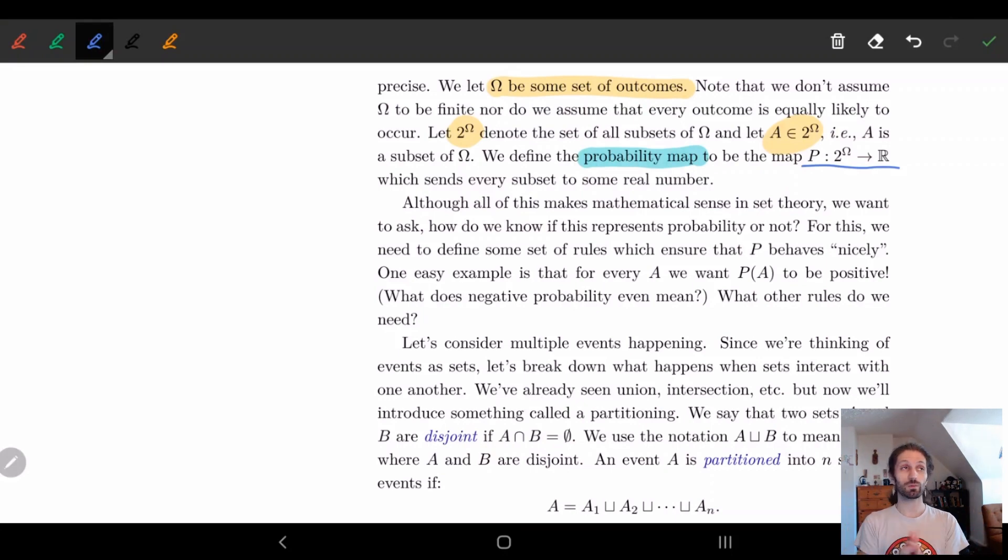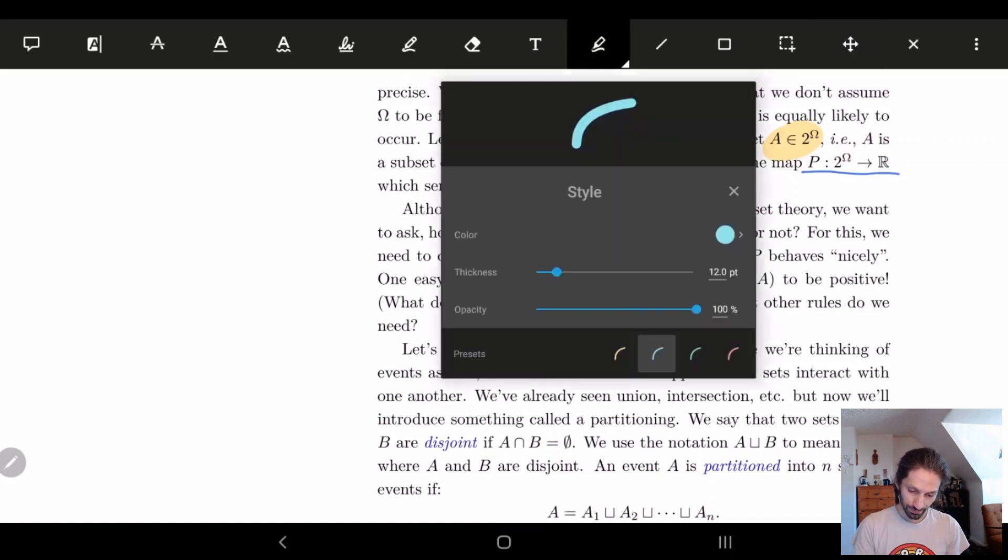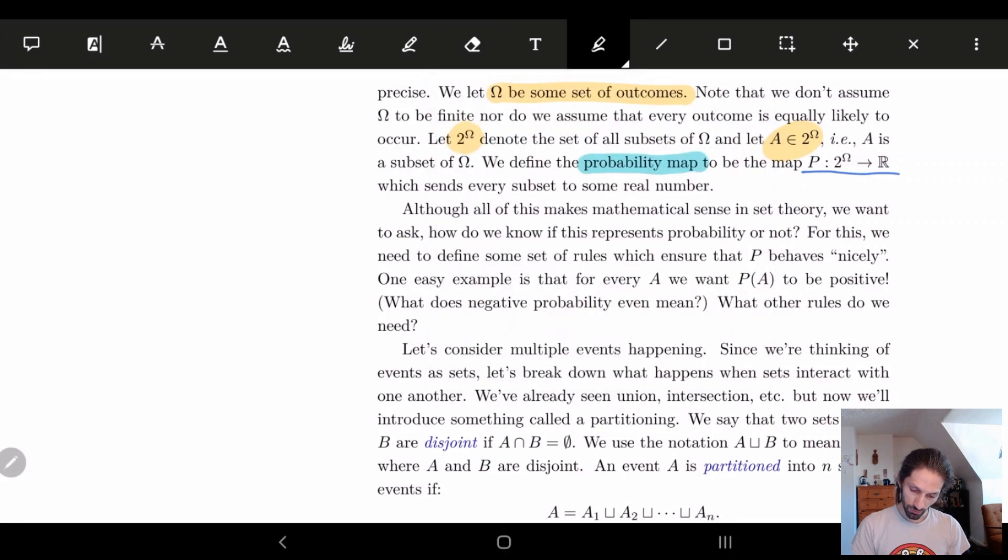So one of the first things we might say is, okay, well, one thing we want is the probability of something should never be negative, right? It doesn't make sense. What's a negative probability? Even something not occurring has a positive probability, right? So that's one thing we want. One easy thing is we want P of A to always be positive. One rule. Cool.